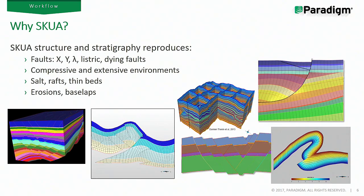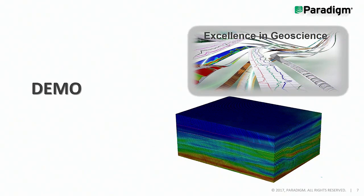Why SCUA? The main differentiator is the structure and stratigraphy framework it creates. It can capture any type of structures — listric faults, lambda faults, highly folded structures, or multi-Z structures that capture any salt geometry. Anything can be captured and included in the structure framework, and we're going to see how to do this on some data sets.